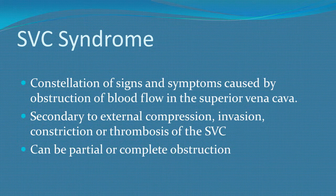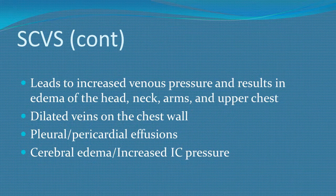There are constellations of signs and symptoms caused by obstruction of blood flow in the Superior Vena Cava, secondary to external compression, invasion, constriction, or thrombosis. Superior Vena Cava obstruction can be partial or complete. It is vulnerable to compression by space-occupying lesions due to its thin-walled structure. This leads to increased pressure, resulting in edema of the head, neck, and upper chest, dilated veins in the chest, pleural and pericardial effusion, cerebral edema, and increased intracranial pressure.